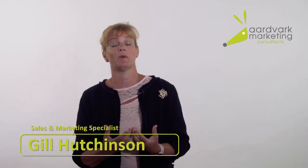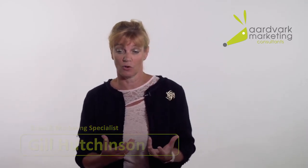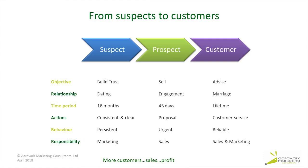The next thing to consider is what we have to do at each stage of the relationship. On this slide is a suspect, a prospect, and on the right-hand side, a customer. How we act towards these people is going to be different — the relationship is different each time. You can liken it to dating as a suspect, an engagement as a prospect, and a marriage as a customer, because we hope that's going to be long-term and lifelong.